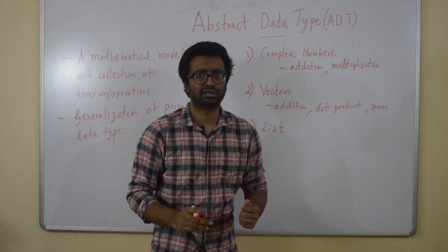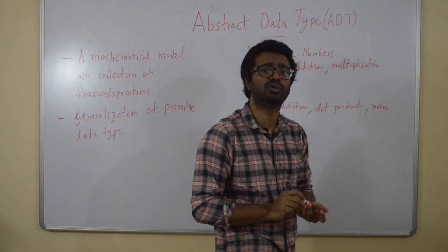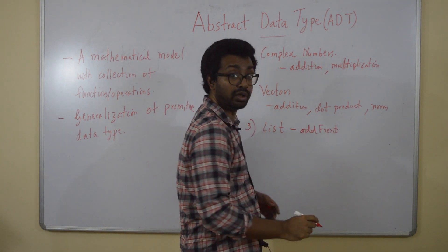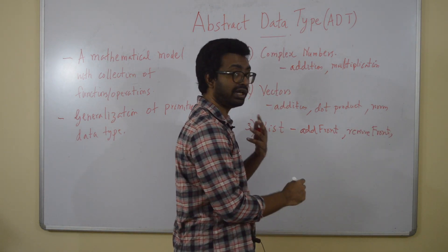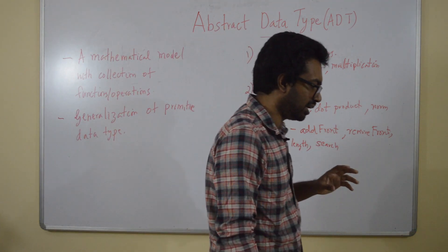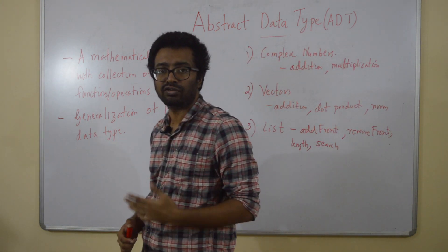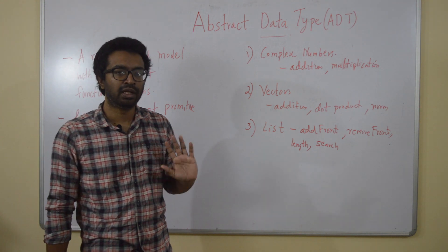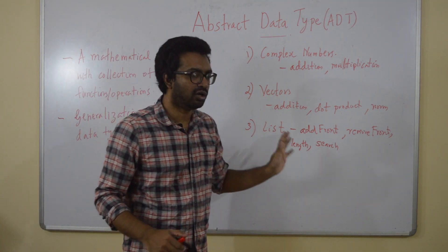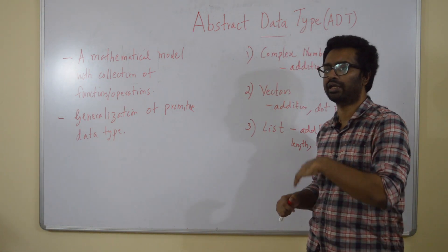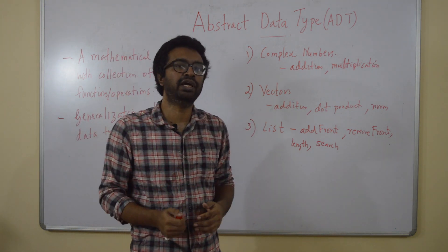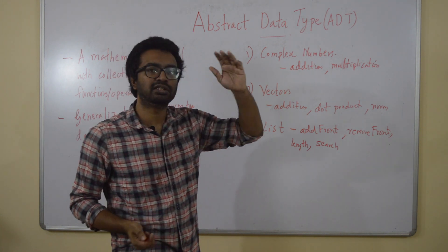A third example: a list — a list of items. If you have used Python, you know what a list is. What are some functions you can associate with a list? Add element to the front — let me call it 'add front' — remove front, a function which gives the length of the list, and search for an element. So these are operations you can associate with a list. Each abstract data type tells you a list of functions associated with that data type, and a user can use each abstract data type just like a primitive data type.